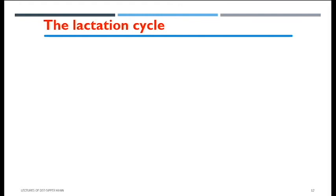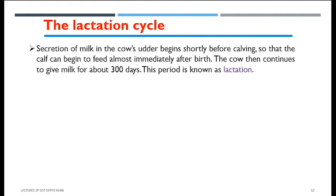What is the lactation cycle? Secretion of milk in the cow's udder begins shortly before birth, so that whenever the calf is born, feed is available immediately. The cow then produces milk for approximately 300 days. This period of milk production is known as lactation — so wherever you read this term, understand that lactation is associated with milk production after the birth of a calf, starting shortly before calving.